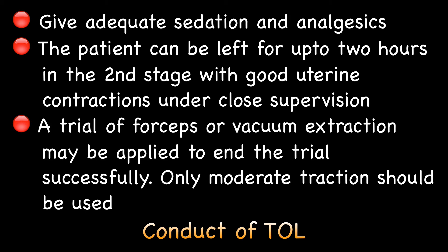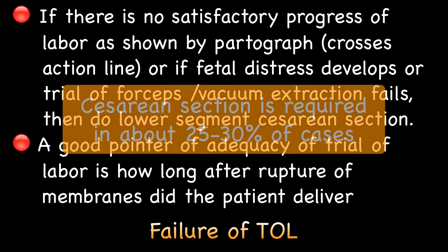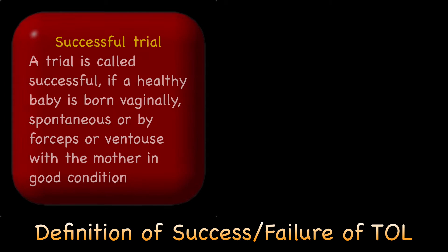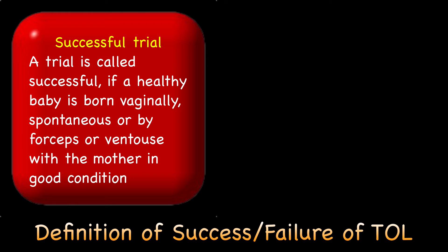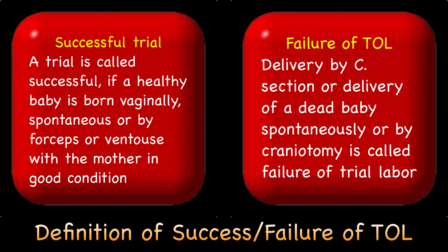Mid-cavity or outlet forceps, known as the trial of forceps, or vacuum extraction may be applied to end the trial successfully. Only moderate traction should be applied. If there is no satisfactory progress of labor as shown by a partogram, or if fetal distress develops, or a trial of forceps or vacuum extraction fails, then do a lower segment caesarean section. Caesarean section is required in about 25–30% of cases. A trial is considered successful if the baby is born per vaginum — spontaneously or using forceps or ventouse — with the mother and fetus in good condition. Delivery by caesarean section, or delivery of a dead baby spontaneously or by craniotomy, is called failure of trial of labor.